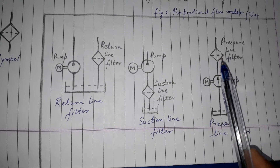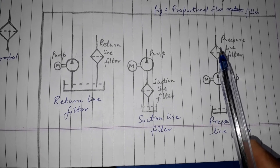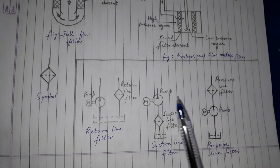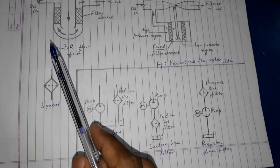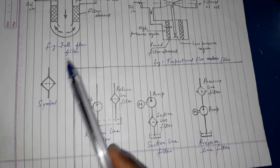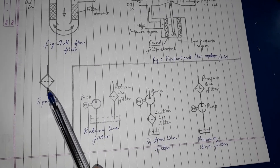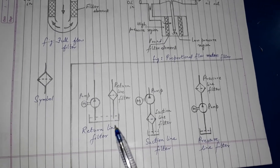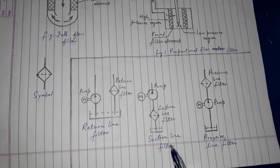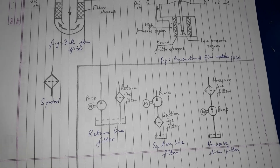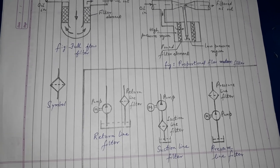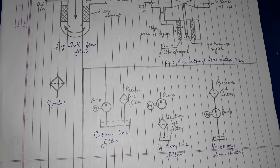Pressure line filter delivery side पे लगाया जाता है। तो यह था filter — जहाँ पे हमने उसके classification, symbol, और location की बात की। उम्मीद है आपको यह वीडियो पसंद आया। फिर मिलेंगे अगले वीडियो में बहुत ही जल्द, तब तक के लिए Goodbye।